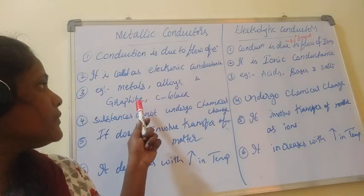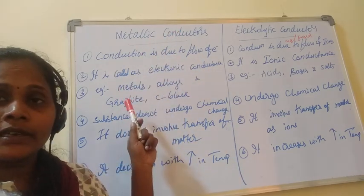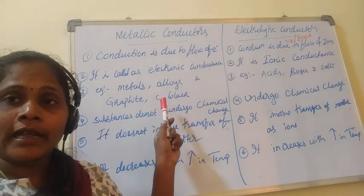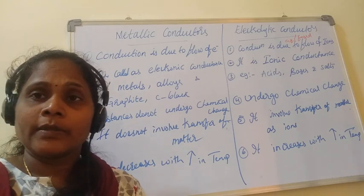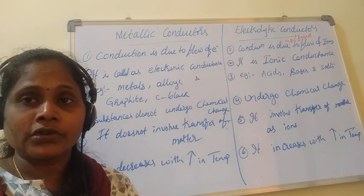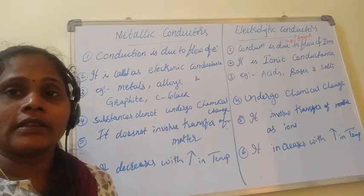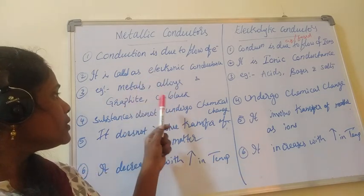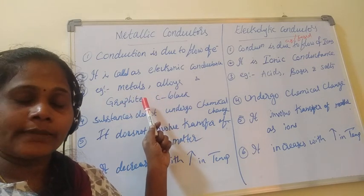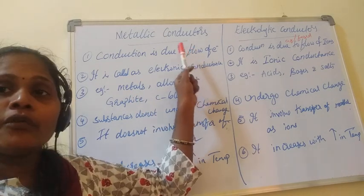The best examples of metallic conductors are most metals and alloys. Non-metals such as graphite and carbon black are exceptions — graphite is used as anode or cathode in electrodes but is not a metal. Yet graphite and carbon work exactly like metals, showing conductance in the form of electron flow. Therefore they are included in metallic conductors.